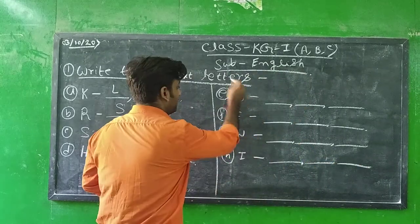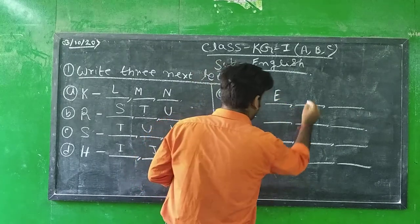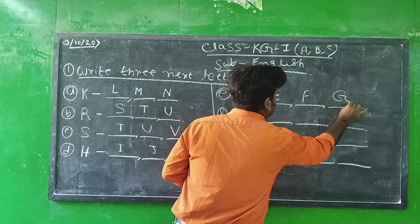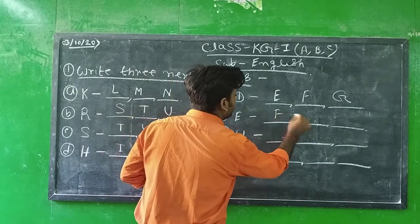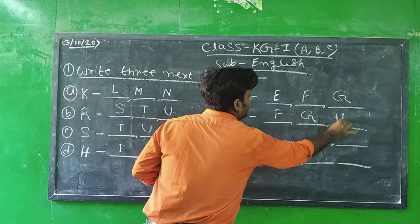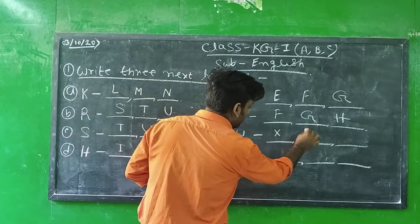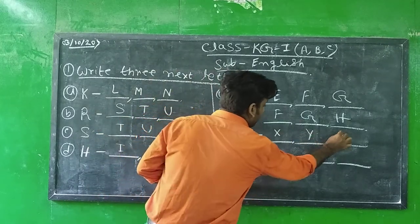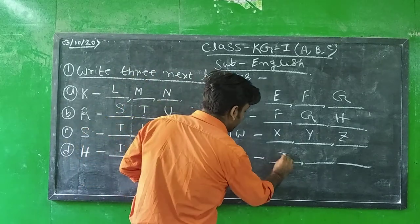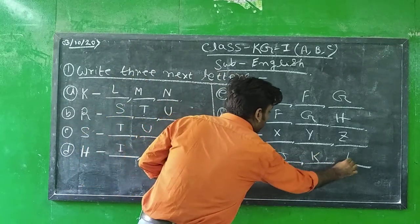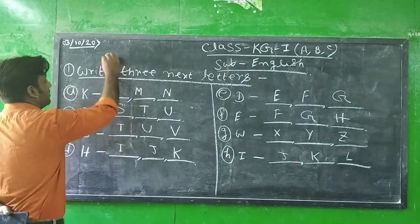D, D, E, E, F, G, E, E, F, G, H, W, W, X, Y, Z. And next — I, I, J, K, L. So this is your last one.